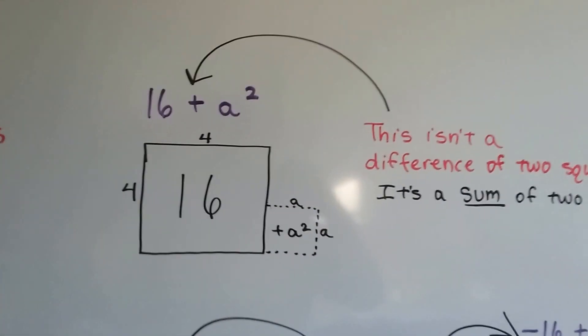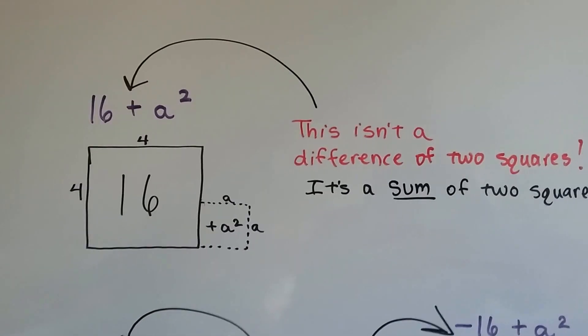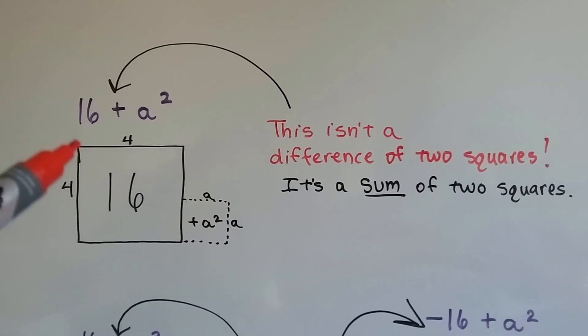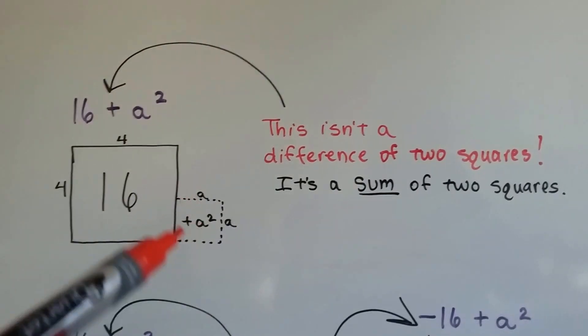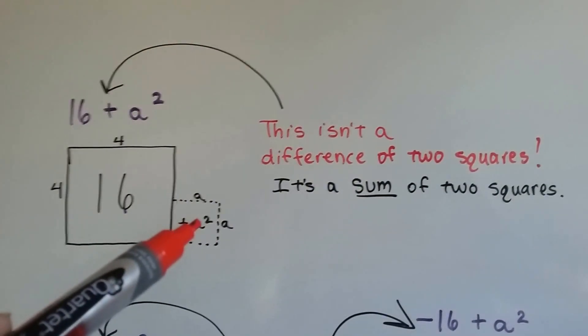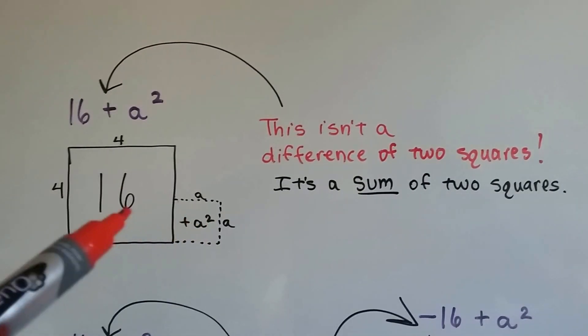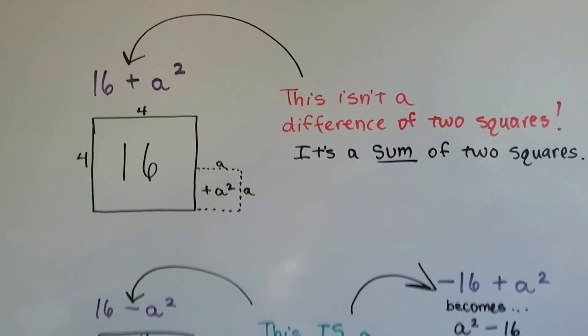So now I want to show you something. This isn't a difference of two squares. So what we see is there's a plus sign here. This is a sum of two squares. If we had 16 as our area, and we added an a squared, well that means we added a little bump out to the side. Now we have a composite figure. And it's a sum of two squares, because we're adding these two squares together. So that isn't a difference of two squares. Remember, difference means subtraction.